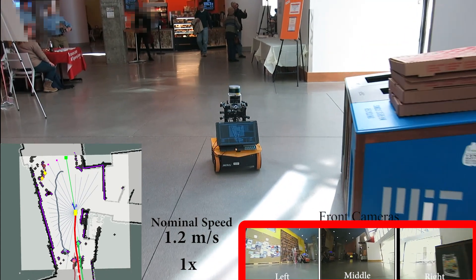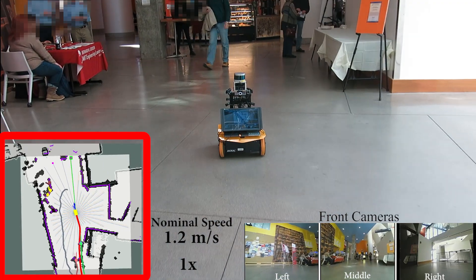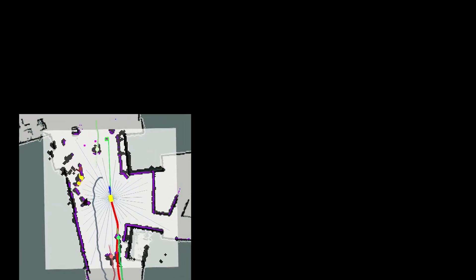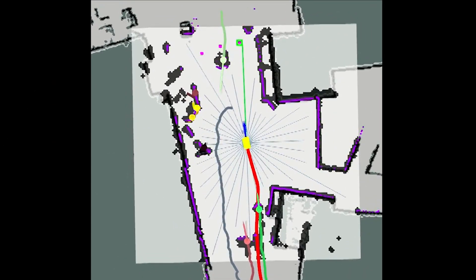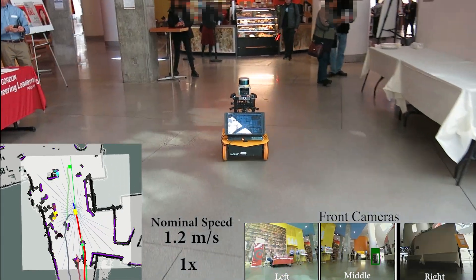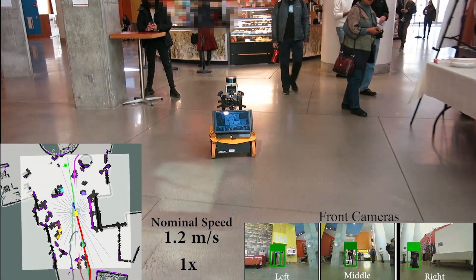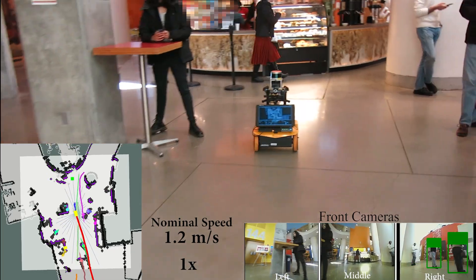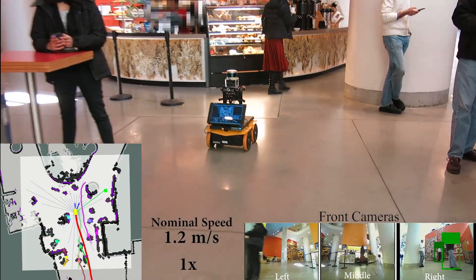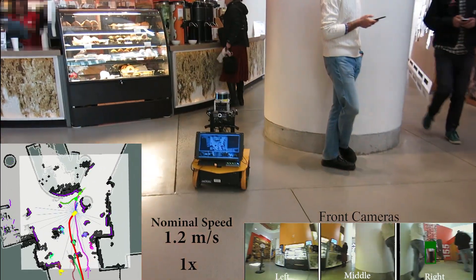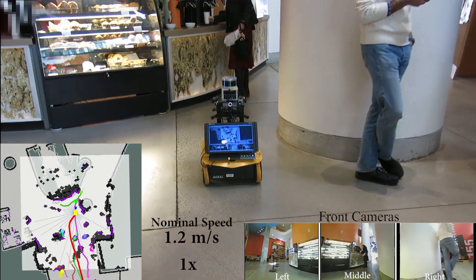Each detected pedestrian is shown as a cylinder with a velocity vector. A global path planner is used to find a sub-goal, which is shown as the green vector in the sensor data view. Here, the robot waits while a lady gets her coffee.